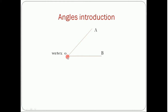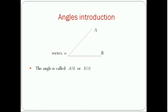This line is OA and this line is called OB. The common point of these two lines is O, and this is the vertex where the angle is formed. The angle is called AOB and we can also say it BOA.